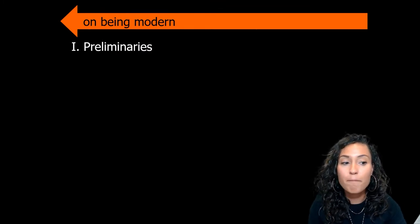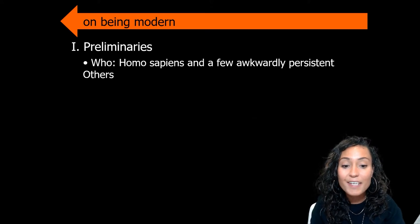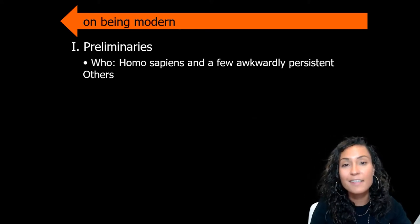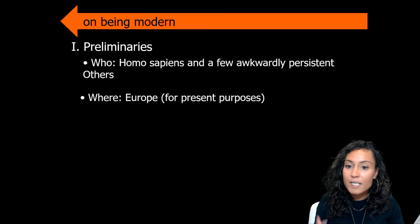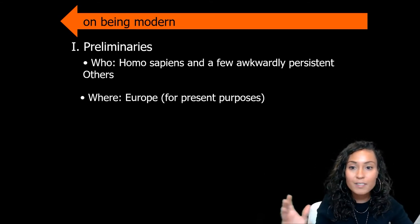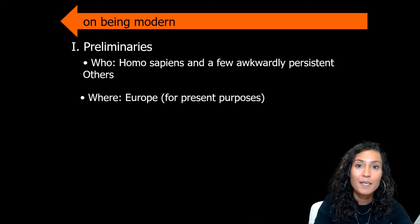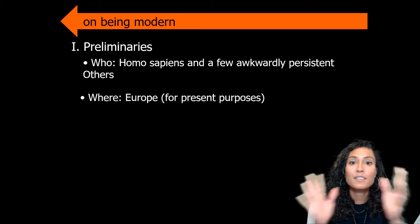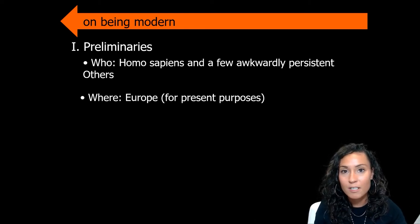When we talk about behaviorally modern humans, we are primarily referring to our direct Homo sapien ancestors living in Europe between about 40,000 and 10,000 years ago. Homo sapiens were of course living throughout the Old World in both Africa and Eurasia, and were beginning to spread to other further-afield places, but for today we're just going to focus on Europe.